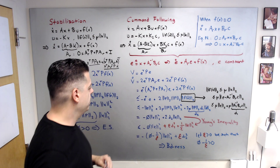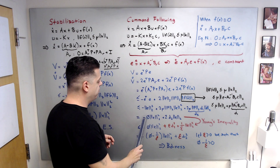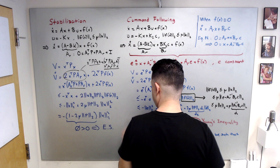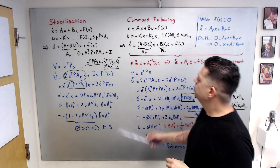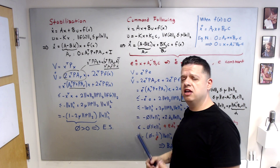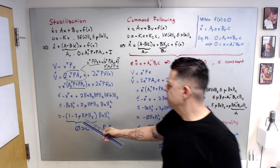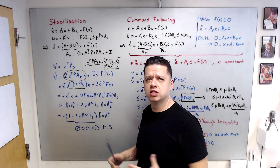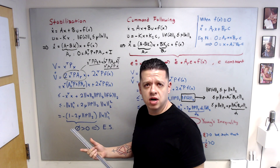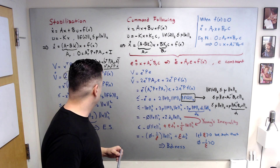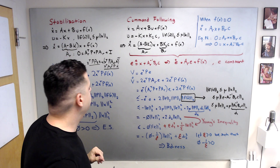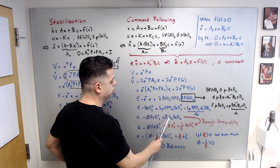Calling the coefficient d2, we arrive at: V-dot ≤ minus phi*norm(e)^2 + 2*d2*norm(e), where phi has the same condition as in the stabilization case. By choosing K to make A_R Hurwitz and if necessary using optimal control to minimize norm(P), we satisfy the positive definiteness of phi. Assuming phi is positive definite, we have the term 2*d2*norm(e) remaining.